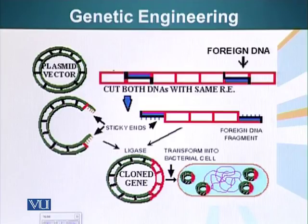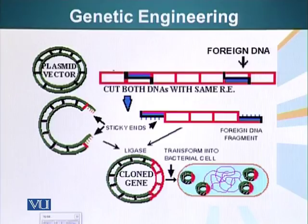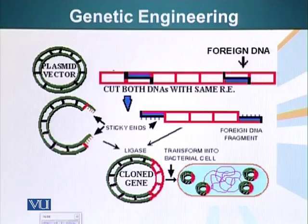Genetic engineering means piecing two different DNAs together, stitching two different DNAs together. So what people do is they take a plasmid vector. Plasmid vectors are small circular DNA pieces that are present in bacteria. Bacteria has one large chromosome which is a circular DNA molecule, and in addition to that, there are other smaller circular DNA molecules present in the bacteria. These smaller DNA molecules are called plasmids.